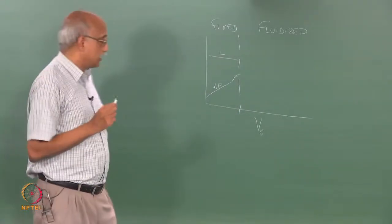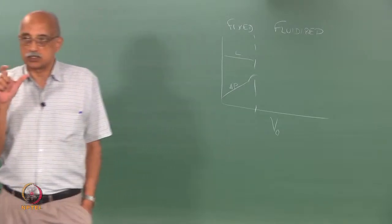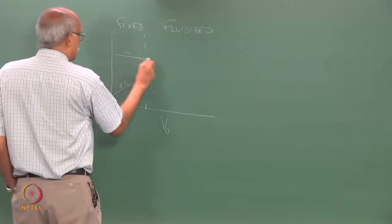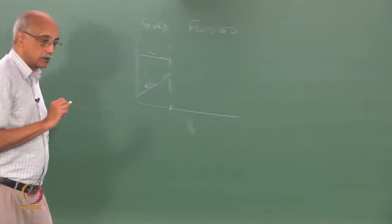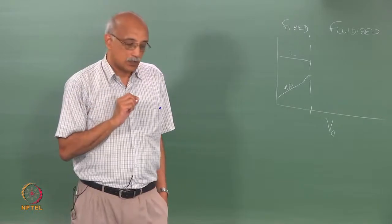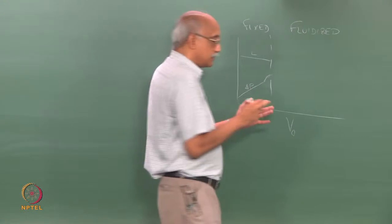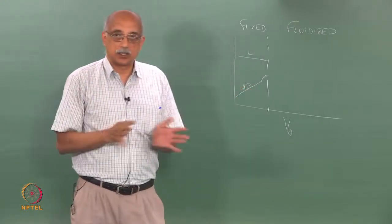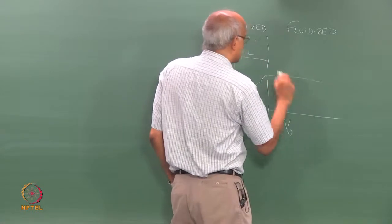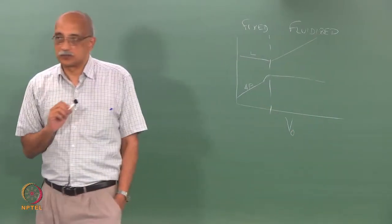At the incipient fluidization point there is still no significant change in bed length, but there is a change in delta-p that you can see. After this point, full fluidization sets in where the particles float apart and are entrained in the fluid. At that point delta-p becomes steady and the bed length starts to increase.